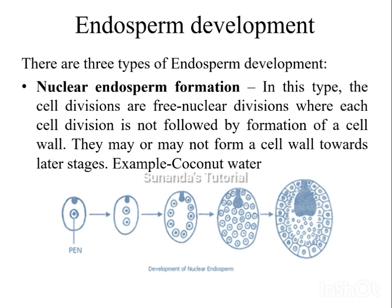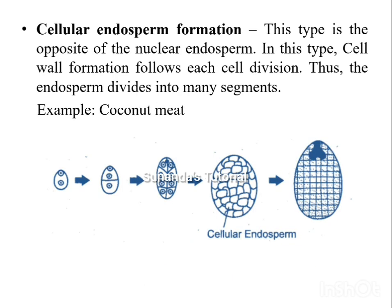According to their developmental pattern, endosperm can be categorized into three types: nuclear endosperm formation, cellular endosperm formation, and helobial endosperm formation. In nuclear endosperm formation, cell division is free nuclear — each cell division is not followed by the formation of a cell wall. Cell walls may or may not form later. Coconut water is a classic example of free nuclear endosperm.